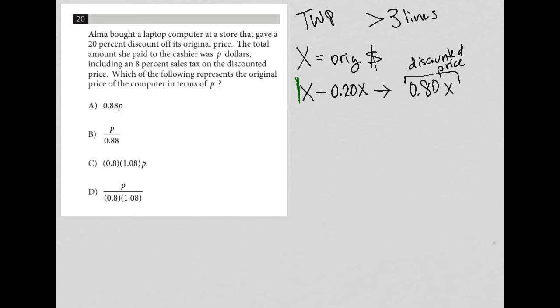So now the next sentence says the total amount she paid to the cashier was P dollars, including an 8% sales tax on the discounted price. So how do we translate that? I'm going to say that P, which is the total price, is equal to the discounted price, so the 0.80X, in this case, plus the sales tax, which we were just told is 8%. So that's going to be 0.08 times 0.80X, right? Because this will be 8% of the discounted price, so this is the sales tax.